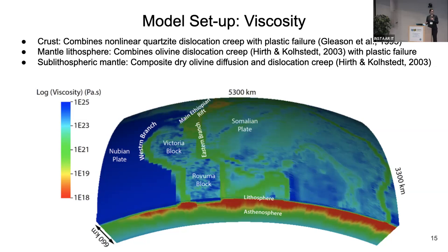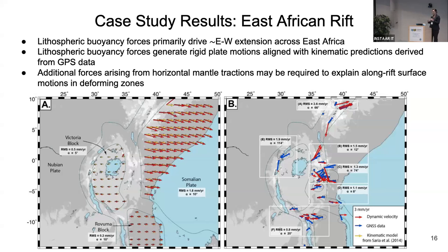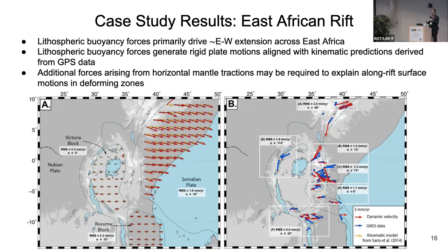This is a 3D model of the East African Rift area and surroundings. Red indicates lower viscosity, and you can see we captured the asthenosphere in that region. We also imposed some deforming zones. We found that lithospheric buoyancy forces primarily explain east-west extension across East Africa. Modeled velocities shown in red align with GPS kinematic velocities shown in yellow, and lithospheric buoyancy forces are aligned with those kinematic predictions.